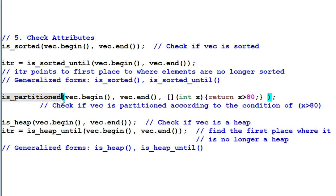Is partition. Check if the data is partitioned into two groups according to this condition. Is heap. Check if the data is a valid heap. Is heap until. Check where the data is no longer being part of a heap. And they both have generalized forms of the same names.